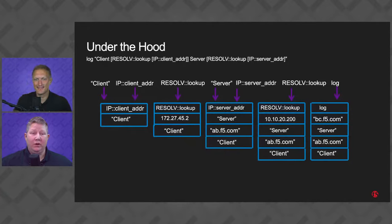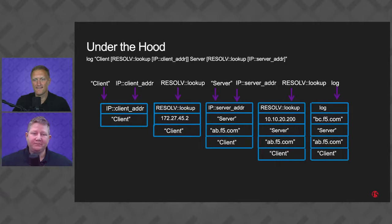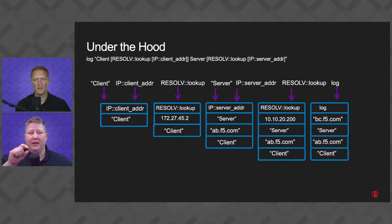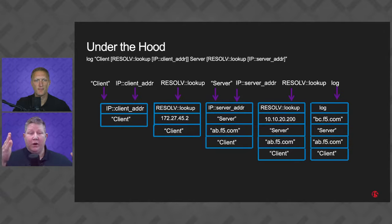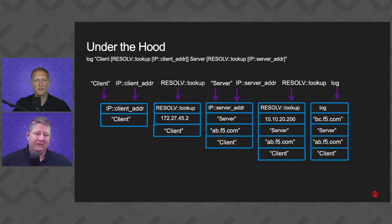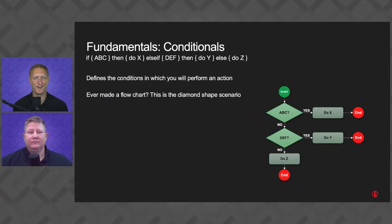Under the hood, when you have a log command with a long string to log, execution goes from the inside out. It can't resolve the lookup until it has what you're looking up — which may be another command that needs to be evaluated first, like evaluating an IP address before a resolve-lookup happens. It does that for both client and server. When all that information has been evaluated and presented in final form, then the log command triggers.